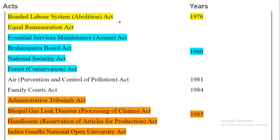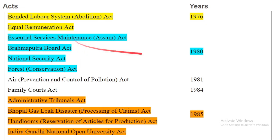Bonded Labour System Abolition Act and Equal Remuneration Act — these two acts passed in 1976. Essential Service Maintenance Assam Act, Brahmaputra Board Act, National Security Act, and Forest Conservation Act — these four acts passed in 1980. Air Prevention and Control of Pollution Act was passed in 1981.